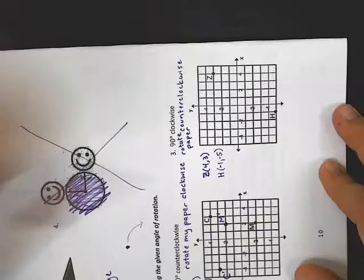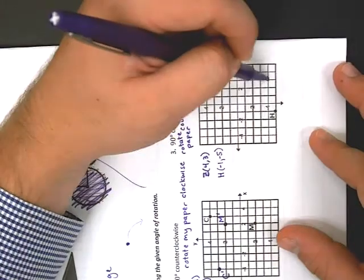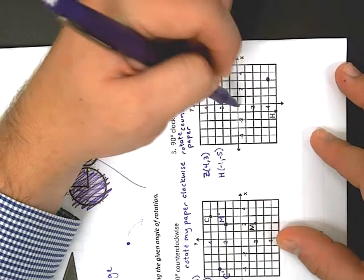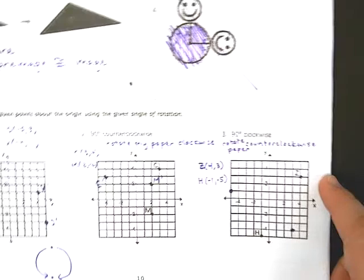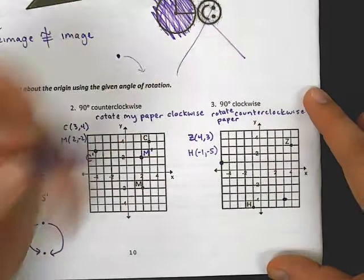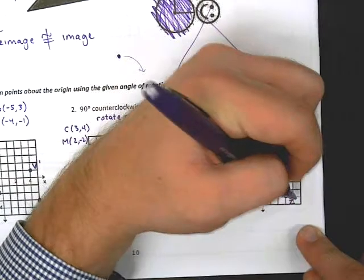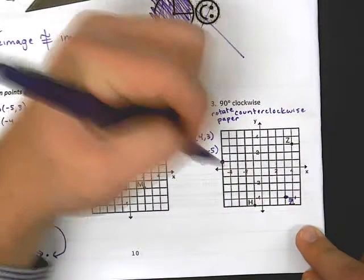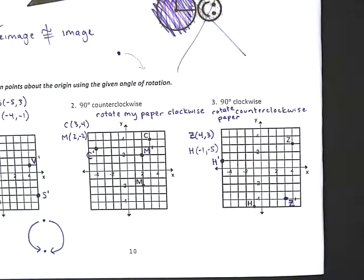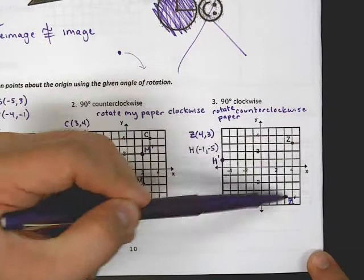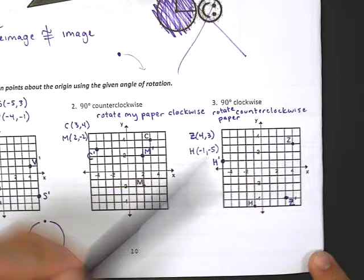And now I plot the points again. 4, 3, origin, 4, 3, and negative 1, negative 5, back 1, down 5. I label, this was Z prime, this is H prime, and just to check, notice what happened. I went from Z to Z prime, that is going in a clockwise direction, H to H prime, clockwise direction. That's what we wanted.